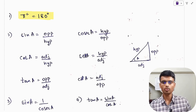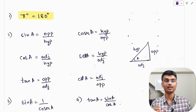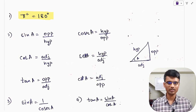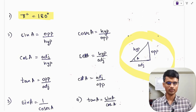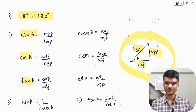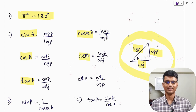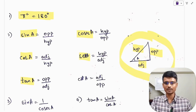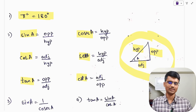Coming to the trigonometric ratios — these are ratios. If you have a right triangle and angle A is at one vertex, the side opposite to A is the opposite side, the side next to A is the adjacent side, and the longest side is the hypotenuse. So sin A is opposite divided by hypotenuse, cos A is adjacent divided by hypotenuse, tan A is opposite divided by adjacent, cosec A is hypotenuse divided by opposite, sec A is hypotenuse divided by adjacent, and cot A is adjacent divided by opposite.